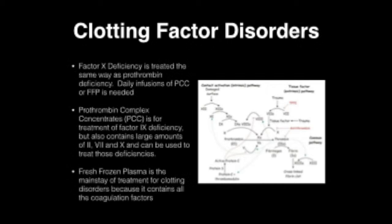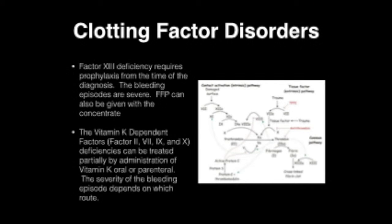Fresh frozen plasma is the mainstay of treatment of clotting disorders because it contains the coagulation factors. Factor XIII deficiency requires prophylaxis from the time of diagnosis; the bleeding episodes are severe, and FFP can be given with concentrate. The vitamin K-dependent factors II, VII, IX, and X deficiencies are treated partially by administration of vitamin K, oral or parenteral.